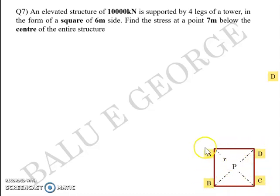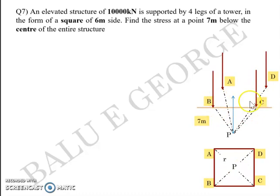In plan it looks like this. P is a point of interest. You have the square in plan, 6 meters by sides. P is some point 7 meters below the center. So the center is nothing but the point where the diagonals meet. So in elevation it looks like this. You have four pillars which support the elevated structure whose weight is already given. A, B, C, and D are the points at which the legs meet at the ground level, and P is a point 7 meters below the ground level.